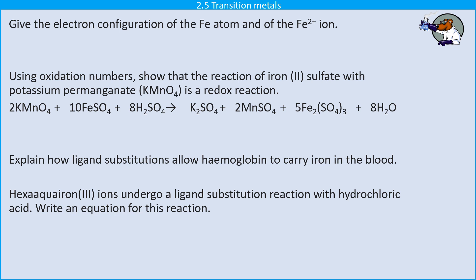So let's look at this electron configuration first. We're thinking about the iron atom, and that's going to have an electron configuration of 1s2, 2s2, 2p6, 3s2, 3p6, 4s2, 3d6. Those last two bits you can write in either order. Some people choose to keep their threes and fours together; my personal preference is to write them down in the order in which the electron shells are filled. Either one is creditworthy in AQA A-level chemistry.